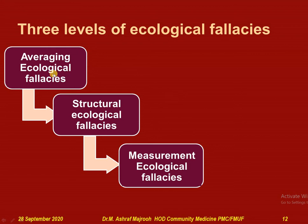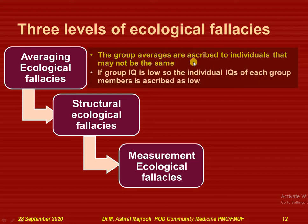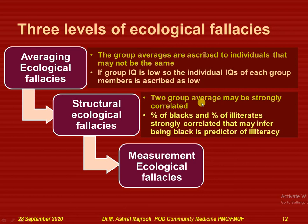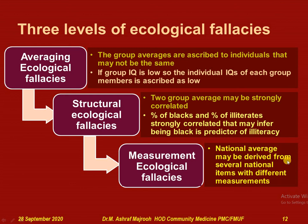The three levels of ecological fallacies are averaging ecological fallacies, structural ecological fallacies, and measurement ecological fallacies. In averaging fallacies, group averages are ascribed to individuals that may not be the same — for example, if a group's IQ is low, the individual IQ of each group member is ascribed as low, which may not be true. Two group averages may be strongly correlated — for example, percentage of blacks and percentage of illiterates — which may infer that being black is a predictor of illiteracy, which may not be true. In measurement fallacies, national averages may be derived from several national items with different measurement parameters, so biases can occur in these measurements.